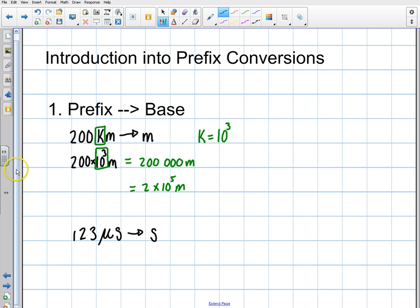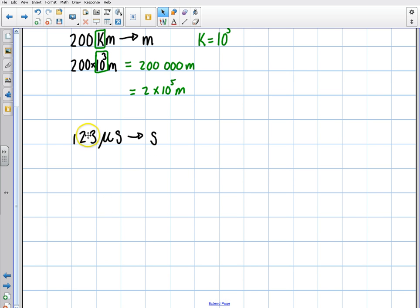Let's take a look at another example here just using our prefix to base. 123 microseconds into seconds. So how do we do that? Well, you need to know what the prefix is. And again, I will encourage you to memorize these. And you're just going to swap it out. Micro is 10 to the minus 6. So this is just going to be 123 times 10 to the minus 6 seconds. And you're done. That's it.